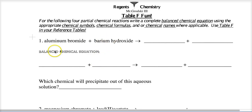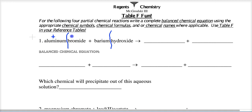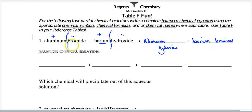Now let's look at your homework. For the first two problems, I'm asking you to write word equations — positive ions in front, negative ions in back. For a double replacement: this positive hooks up with that negative. So we'll have aluminum hydroxide and barium bromide as products. You then need to write the chemical formulas, balance the equation, and evaluate each compound to determine if it's soluble or not — will this reaction produce a precipitate?